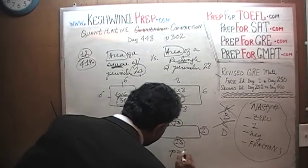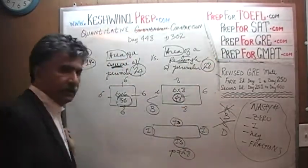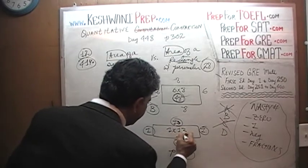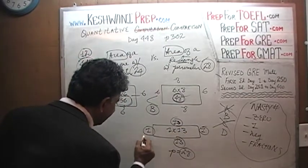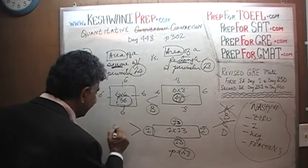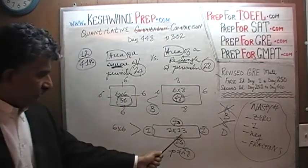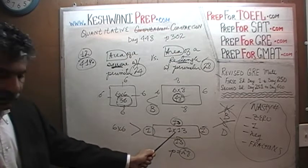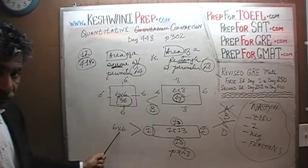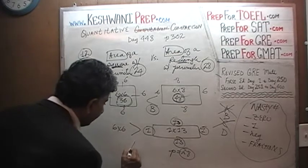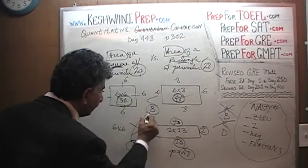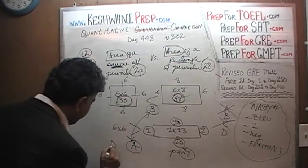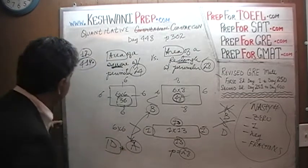But now the area is 1 times 13, which is just 13. And 13 is less than 6 times 6. The area of the rectangle is only 13; the area of the square is still 36. So 36 versus 13 — now the answer is A. Before the answer was B, now the answer is A. We have conflicting answers; therefore the answer is D.